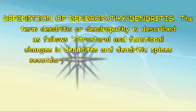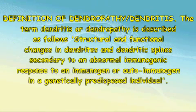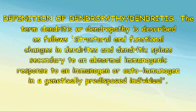Definition of dendropathy or dendritus. The term dendritus or dendropathy is described as follows: structural and functional changes in dendrites and dendritic spines secondary to an abnormal immunogenic response to an immunogen or autoimmunogen in a genetically predisposed individual. The structural and functional model of dendritus or dendropathy in autism, also known as autistic dendritus, may be helpful in understanding autism.